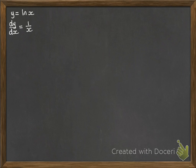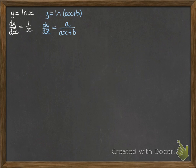Now with the log function, you know that if you're differentiating ln x you get 1 over x. And then in the more general form, remember that if we've got ln of ax plus b, that becomes a over ax plus b by the chain rule.